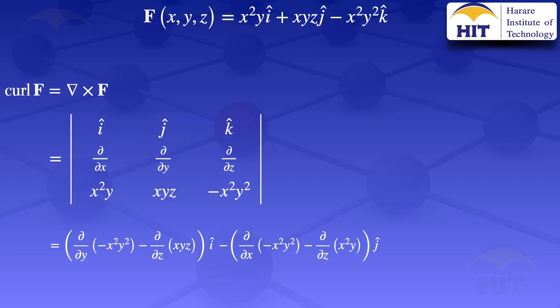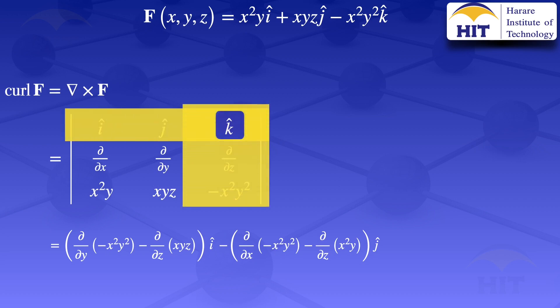We move on to the next element, k̂. We close the row and column containing k̂. The k̂ sits on a positive in the sign array, so we take plus the determinant of the uncovered elements: (∂/∂x)(xyz) minus (∂/∂y)(x²y). For the k̂ component we write: plus [(∂/∂x)(xyz) − (∂/∂y)(x²y)]k̂.